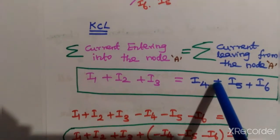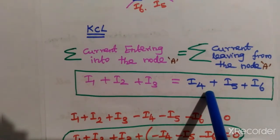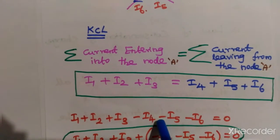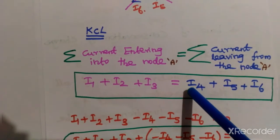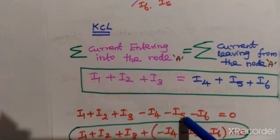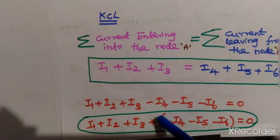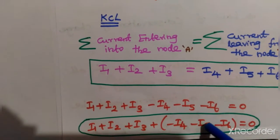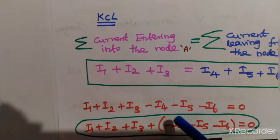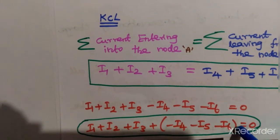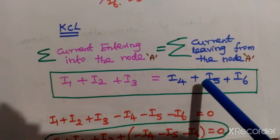From this equation, bringing the right-hand side to the left-hand side gives: i1 plus i2 plus i3 minus i4 minus i5 minus i6 equals zero. This gives us the two equivalent KCL statements: the sum of entering currents equals the sum of leaving currents, or their algebraic sum equals zero.